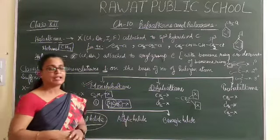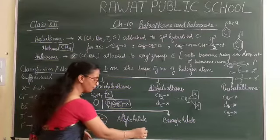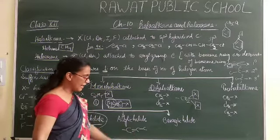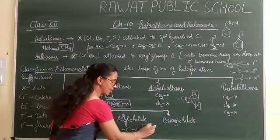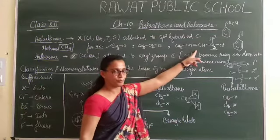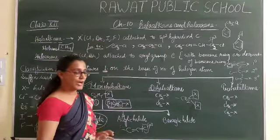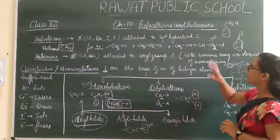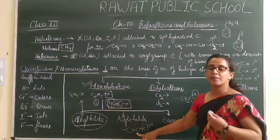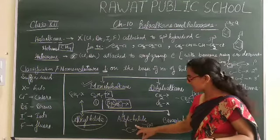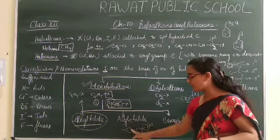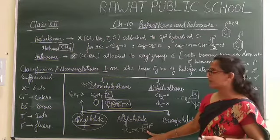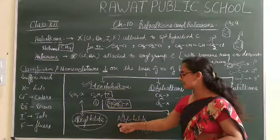Now what about Allylic halides? In an Allylic halide, there is a double bond present in the chain. A particular halogen group is attached to an SP3 hybridized carbon, but this SP3 hybridized carbon is directly attached to a double bonded carbon — an SP2 hybridized carbon. When a particular carbon is attached next to a double bonded carbon, it is known as an Allylic carbon. When the halogen group is attached to this Allylic carbon, then we consider it as an Allylic halide.